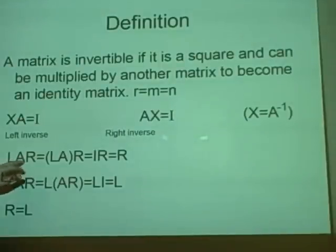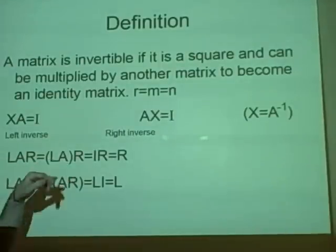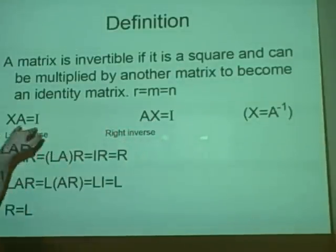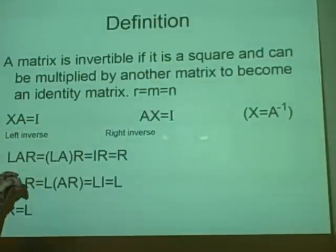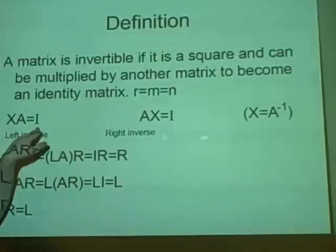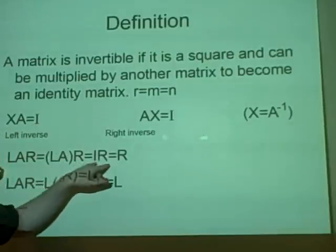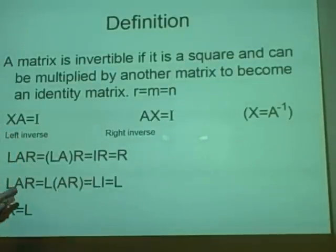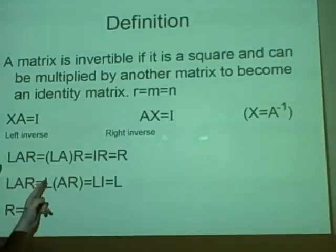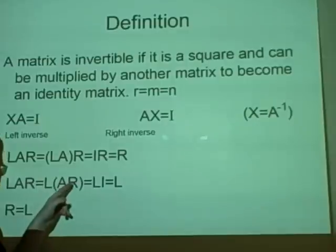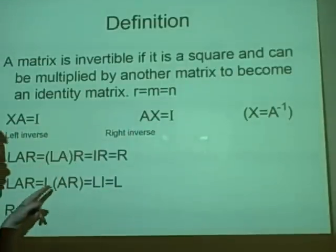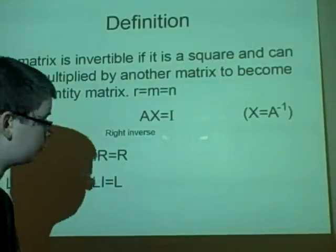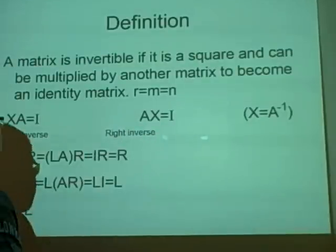There's a quick proof that the left inverse equals the right inverse. We have left inverse L times A times right inverse R. We can rearrange: LA times R — since XA equals the identity, LA equals the identity — so we get IR, and any identity matrix times anything is that matrix, giving us R. Doing the same the other way, L times AR equals LI, which equals L. Therefore R equals L, so the left and right inverses are the same.